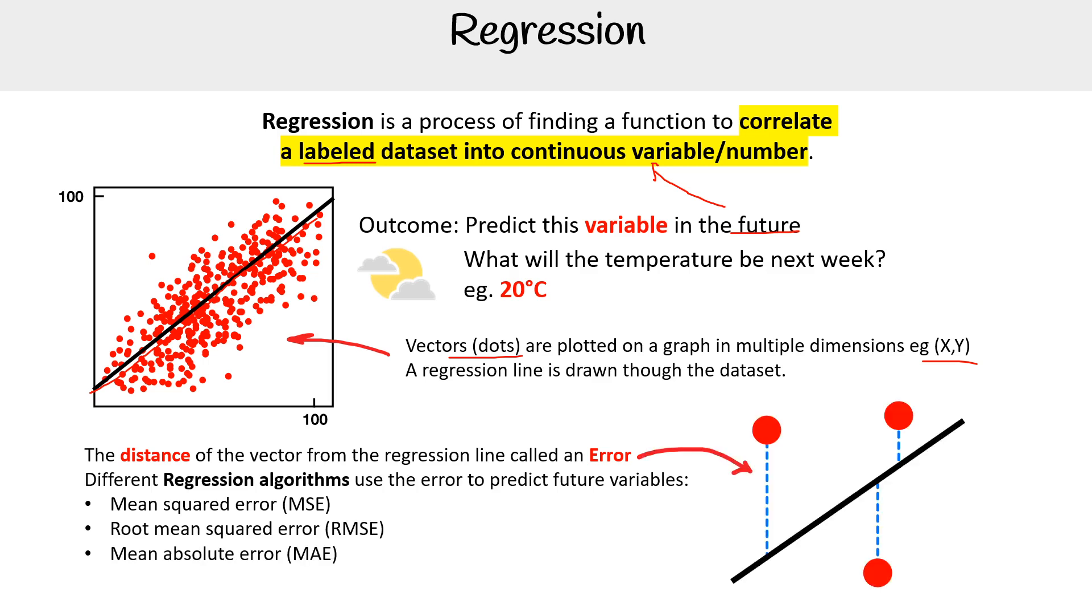Just to look at this graphic here: here's our regression line, and here is a dot—a vector, a piece of information. The actual distance from the line is what we're going to use in our ML model